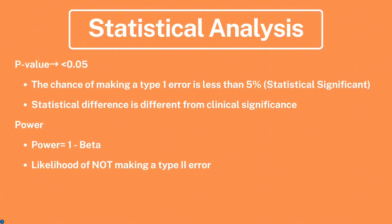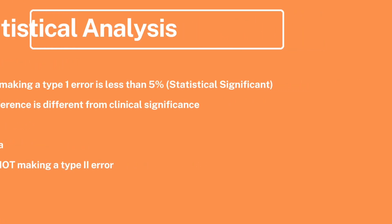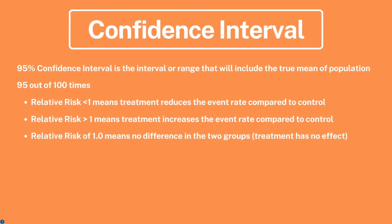Moving on to power: the equation is power equals one minus beta. Power is the likelihood of not making a Type 2 error. A 95% confidence interval is the interval or range that will include the true mean of the population 95 out of 100 times.